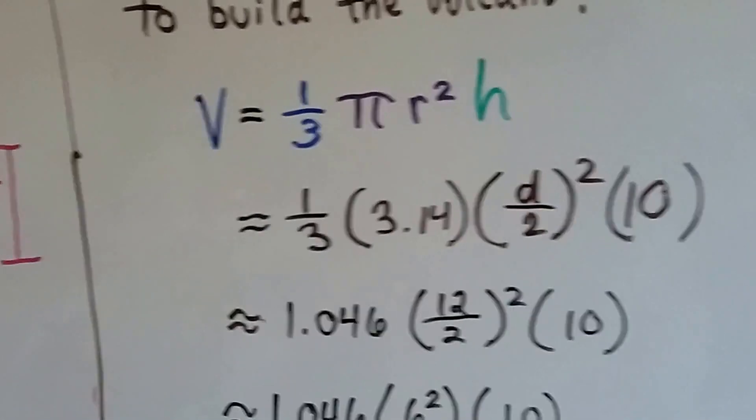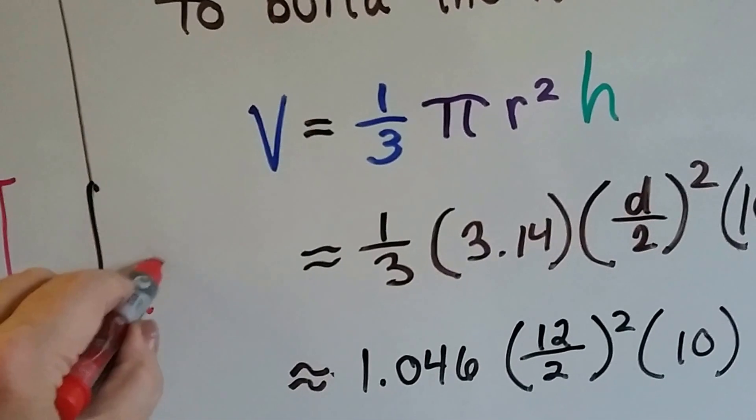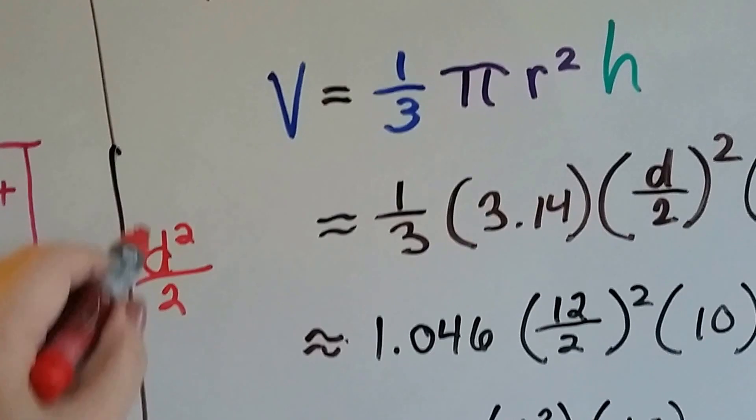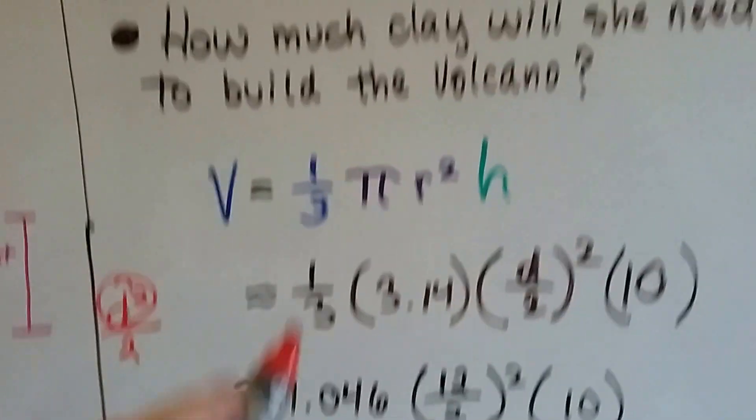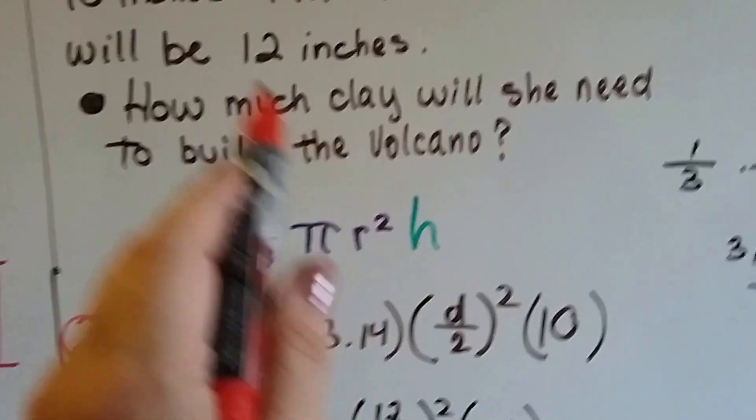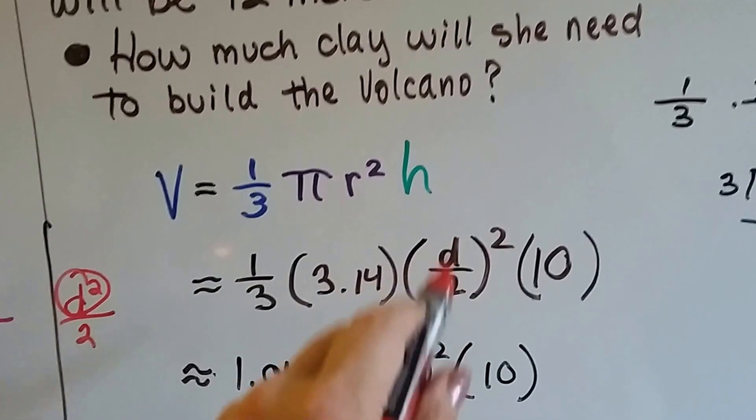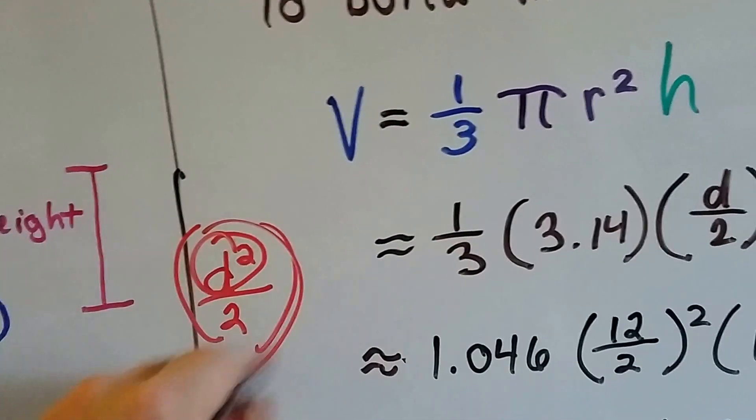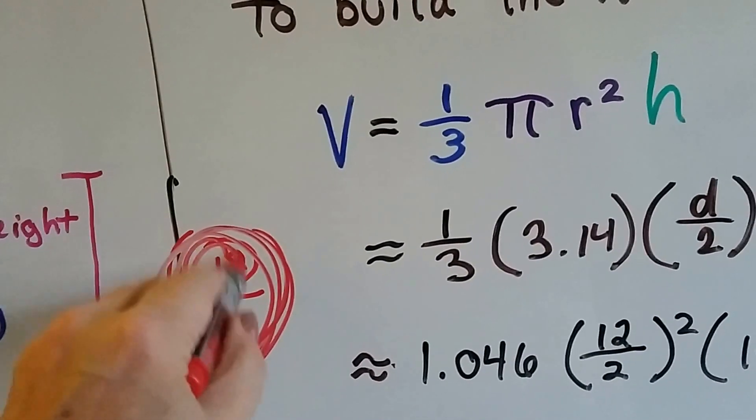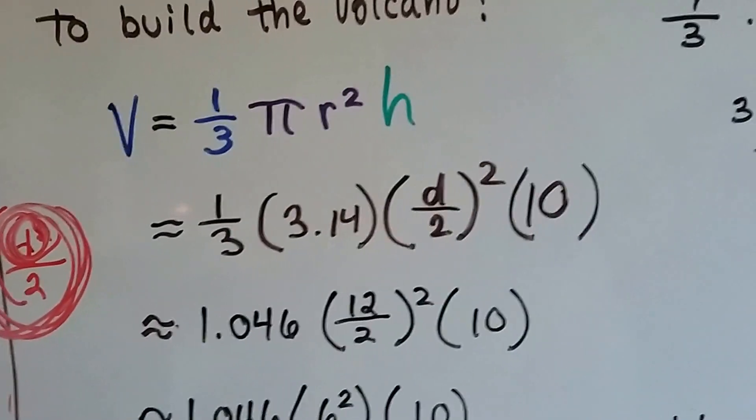Now the reason we don't do d squared over 2 is that means you're only squaring the diameter, and we're not doing that. The diameter is double the radius, so we need to divide it by 2 first and then square it. So by putting the parentheses on the outside, we're squaring this whole thing instead of just the d.